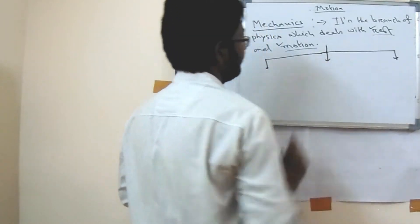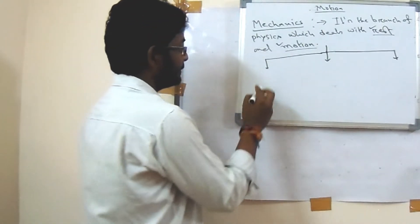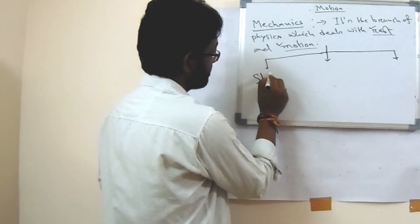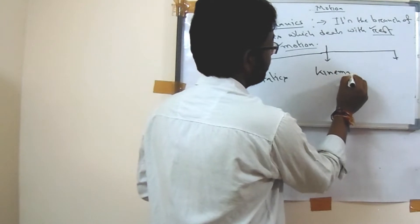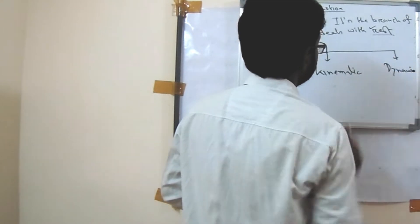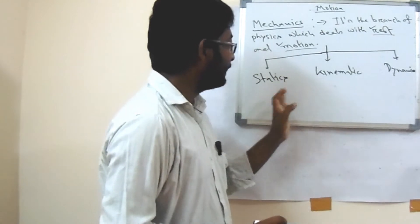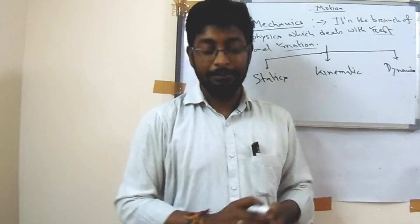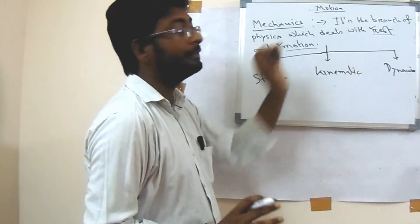Next, mechanics also has three types. So what are these three types? First we can say statics, next is kinematics, and then dynamics. So mechanics basically has three types, and these are the three types of mechanics in the chapter of motion.